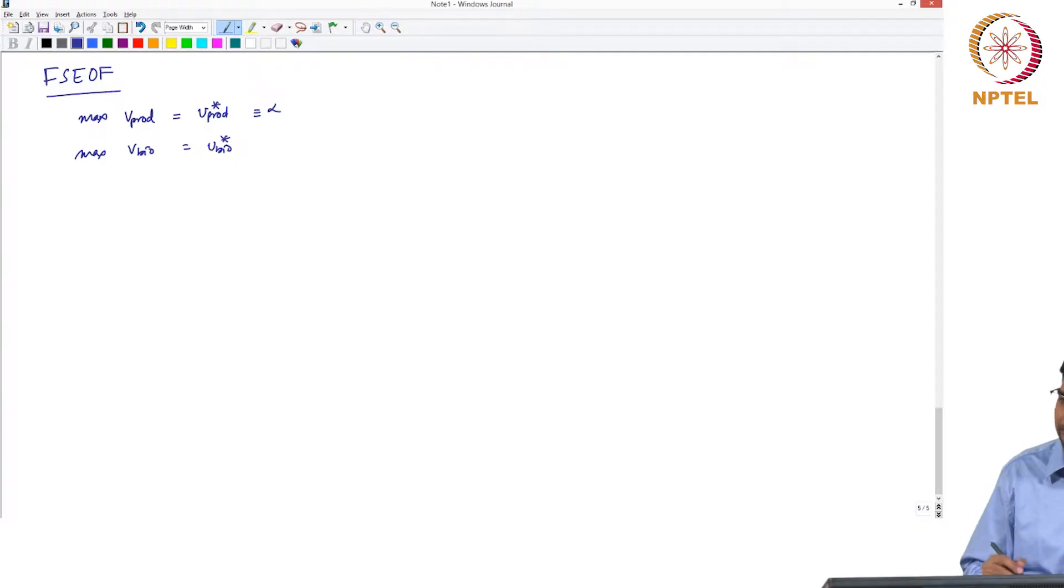Now you run a series of simulations, 1, 2, 3, V10, wherein you set up the same problem. Part of the problem is the same. This is nothing but maximize C transpose V, which is basically Vbio, such that SV equals 0, with Lb's, Ub's.